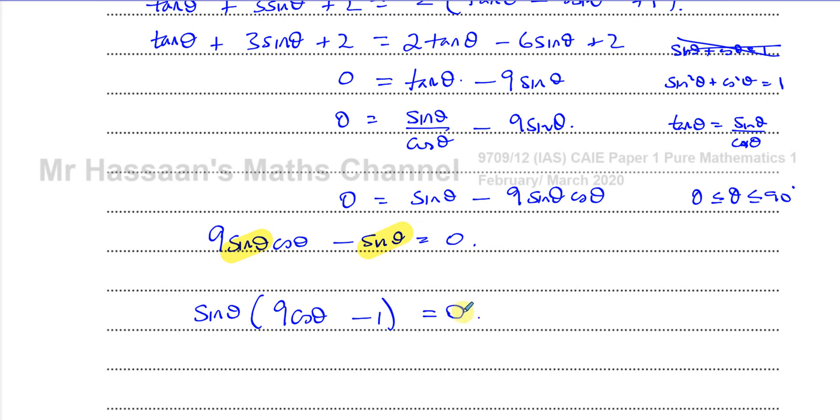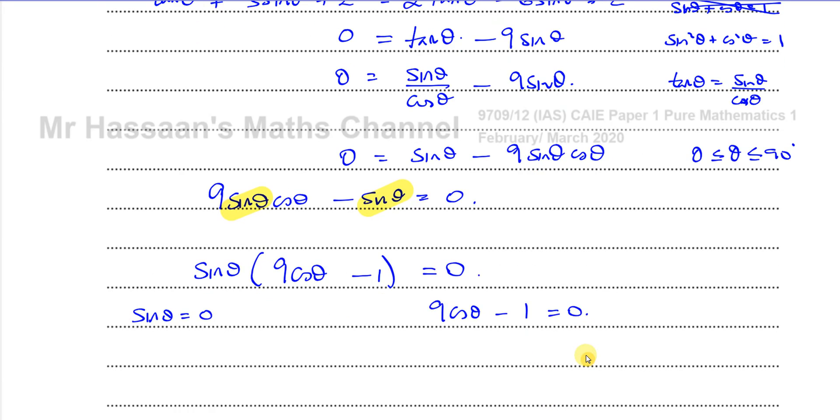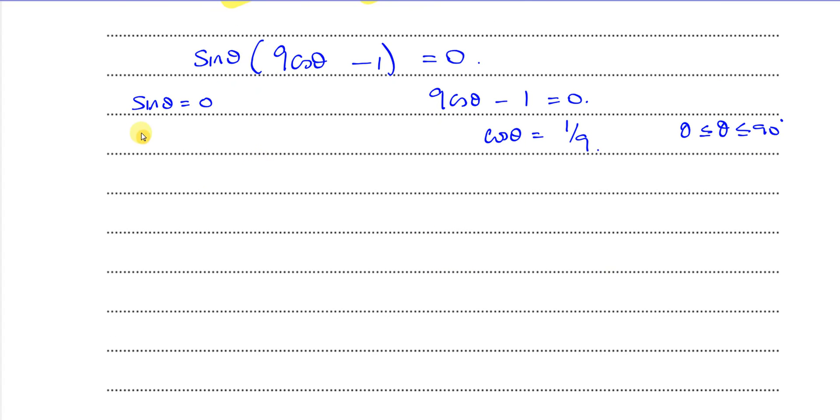Because this is equal to 0, I can use what's called the 0 product property. When I know that two factors or the product of two factors is equal to 0, one of them must be 0. Just like when we solve quadratic equations, that's by factorizing, that's the property that we use. So we say, if you have two things multiplied together and they give you 0, one of them must be 0. Therefore, we can say either the sine of theta is equal to 0 or 9 times cosine theta minus 1 is equal to 0. So this, if I rearrange it, gives us cosine theta is equal to 1 over 9. So now I can use my limits between 0 and 90 degrees and solve this and find the values of theta for which this is true.